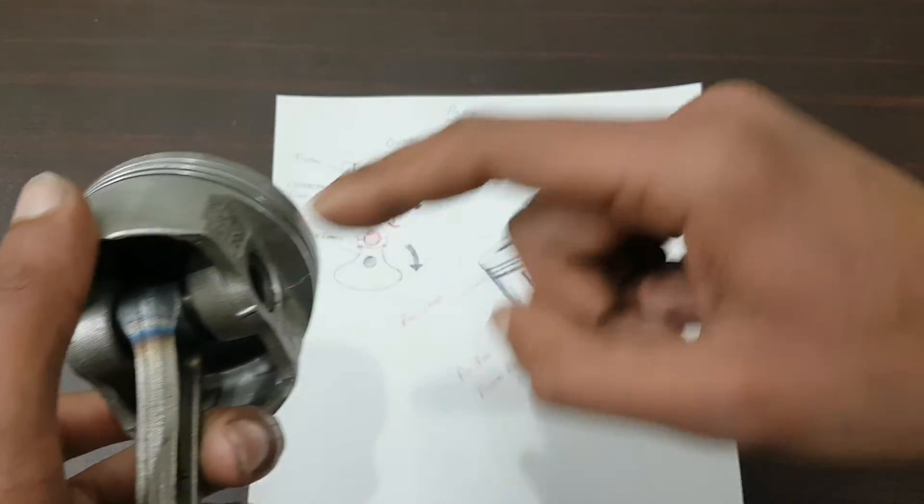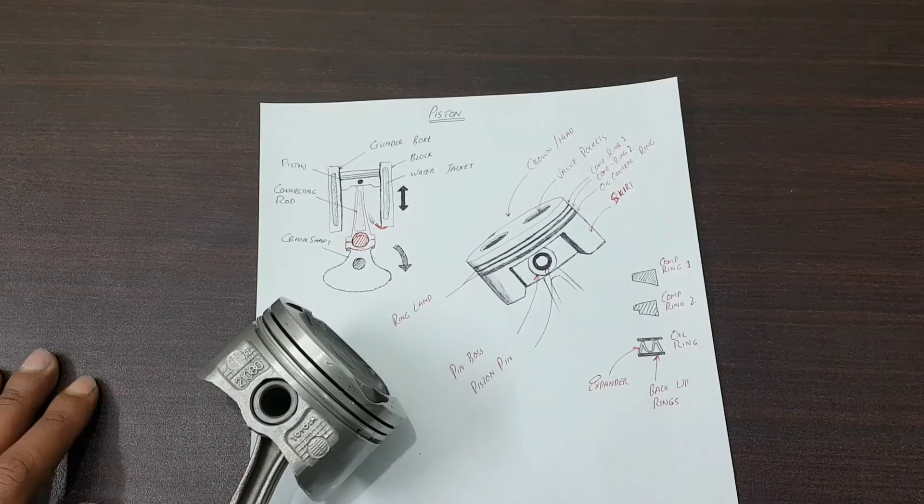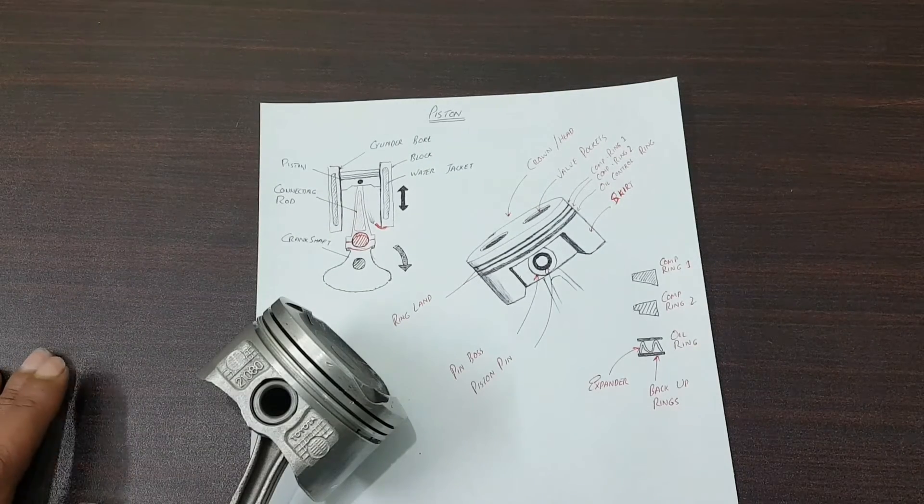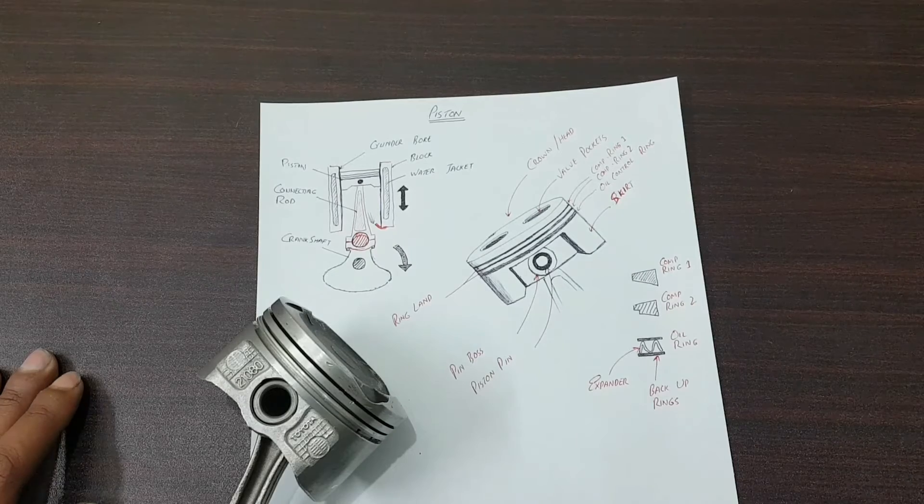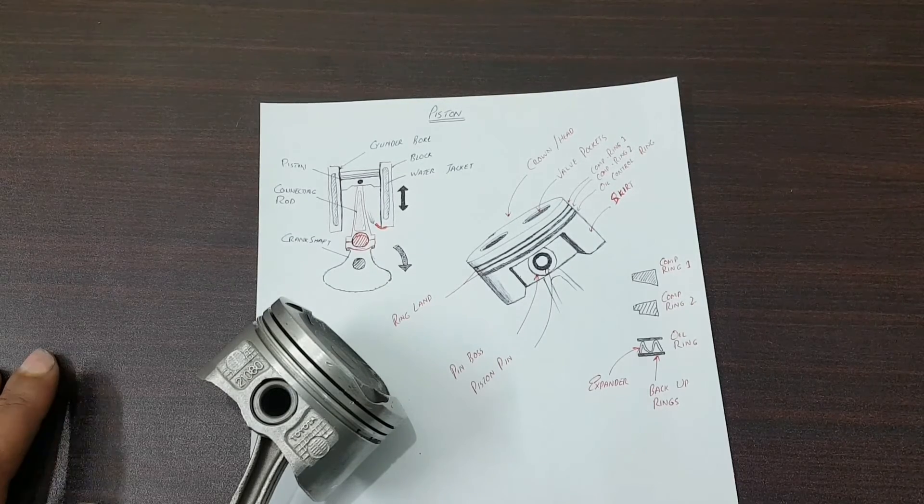Commercial cars mostly have casted pistons made out of aluminum alloy. Casted pistons are generally low cost and easy to produce. However, when it comes to performance, everyone prefers forged pistons.